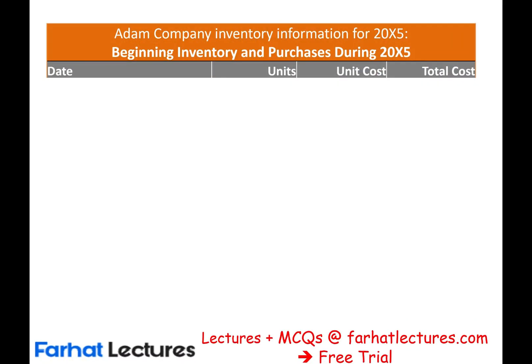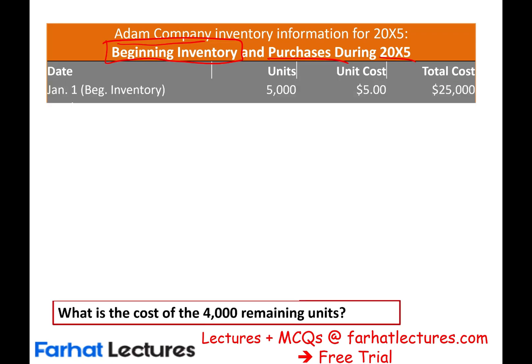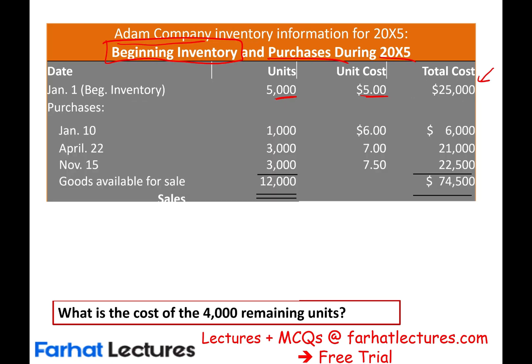To illustrate the concept, we will use a comprehensive example. We have Adam Company and we're looking at their inventory for year X5. The beginning inventory from January 1st was 5,000 units at a unit cost of $5, giving a total cost of $25,000. Then the company made three additional purchases throughout the year.